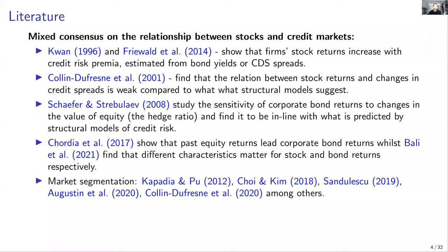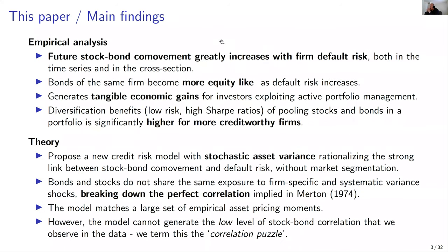A follow-up question from Gustavo Schwenkler: why do you exclude the market segmentation channel, which seems like a plausible additional explanation for rationalizing the puzzle? The presenter responds: that is likely the reason the model cannot generate the unconditionally low level of correlation. It is probably due to some market segmentation. Pursuing that road would be very interesting, but it is more a future research avenue.